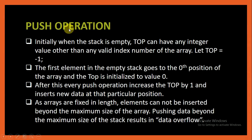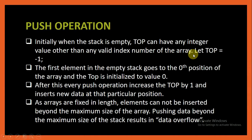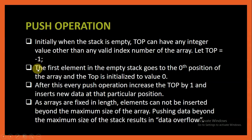Now let us understand the push operation. Initially, when the stack is empty, top can have any integer value other than a valid index number of the array. You can keep top equal to minus 1, or any negative number, because all positive numbers starting from 0 are valid index numbers for the array. When the first element is added to the empty stack, it goes to the 0th position and top is initialized to 0. After this, every push operation increases top by 1 and inserts new data at that particular position.